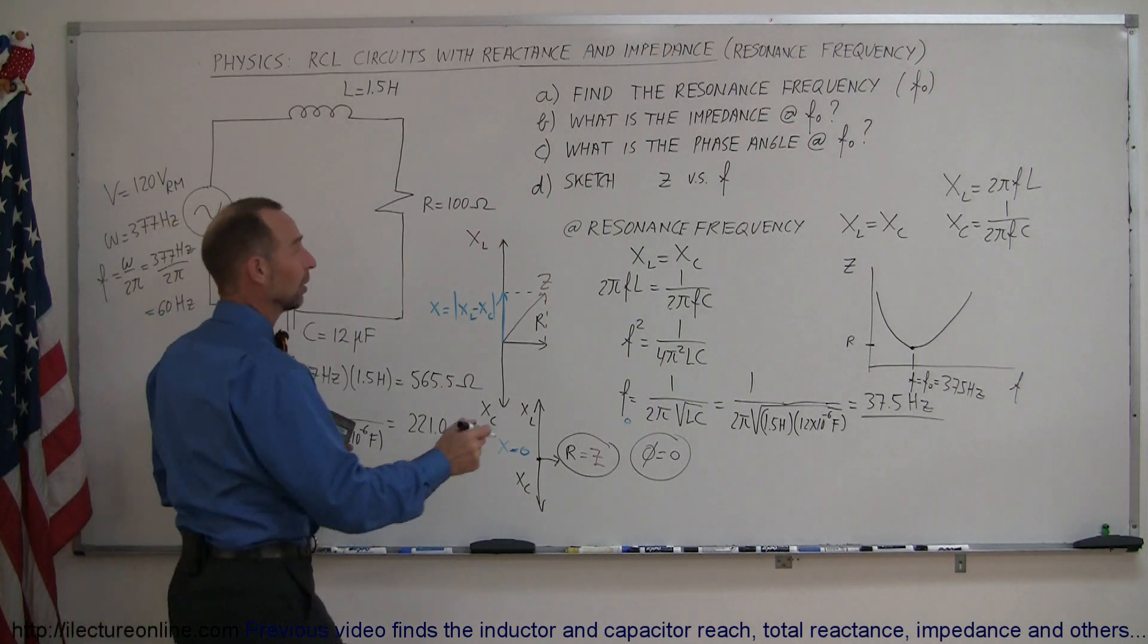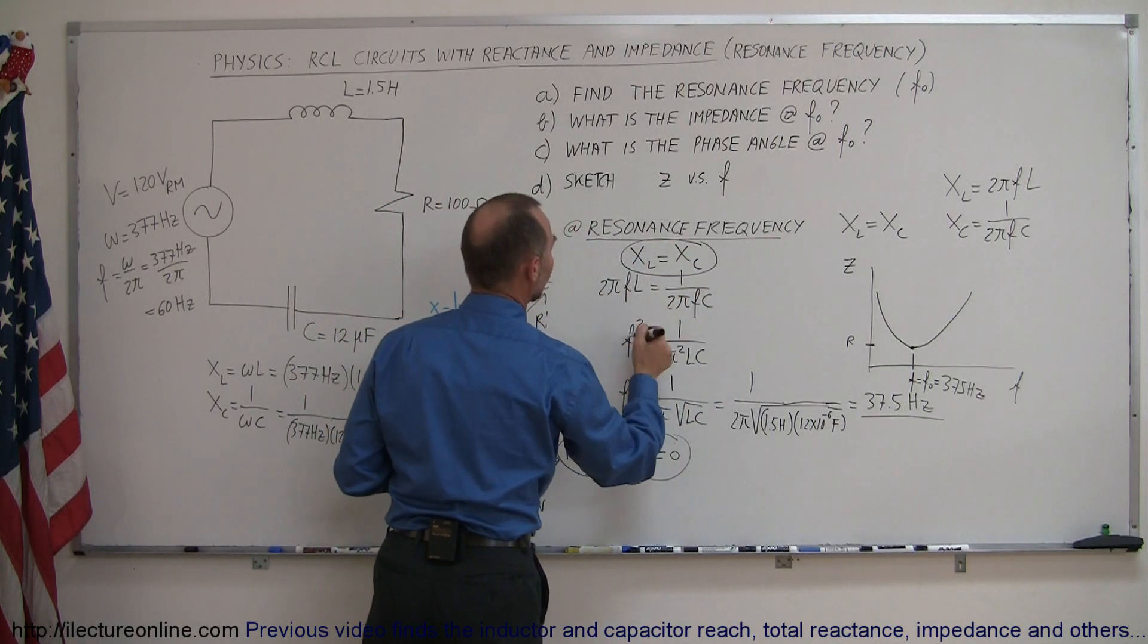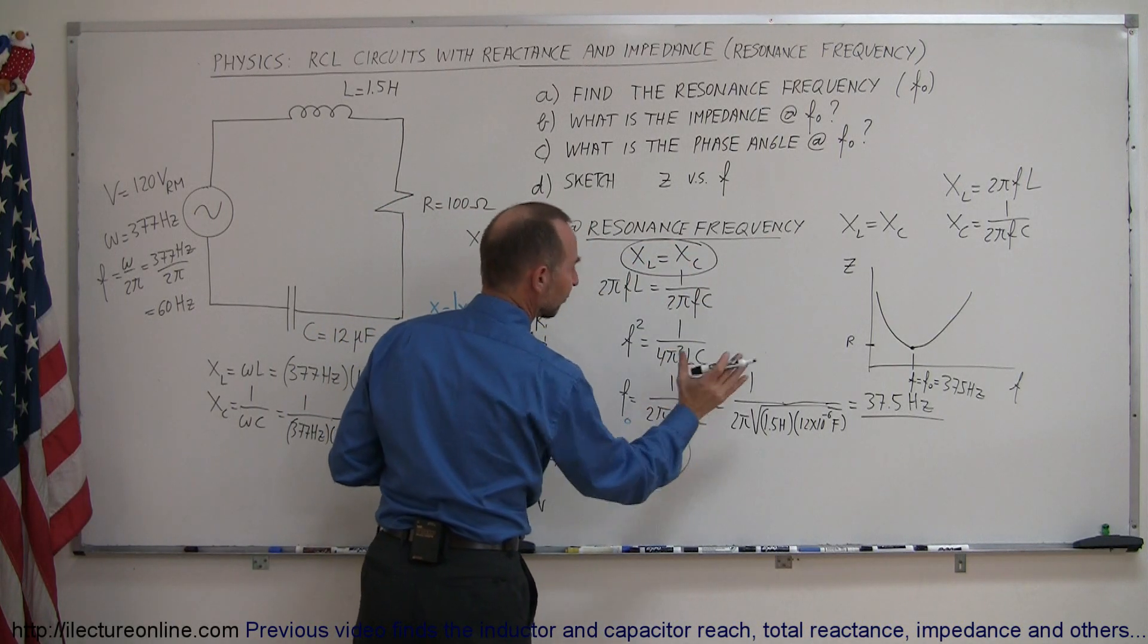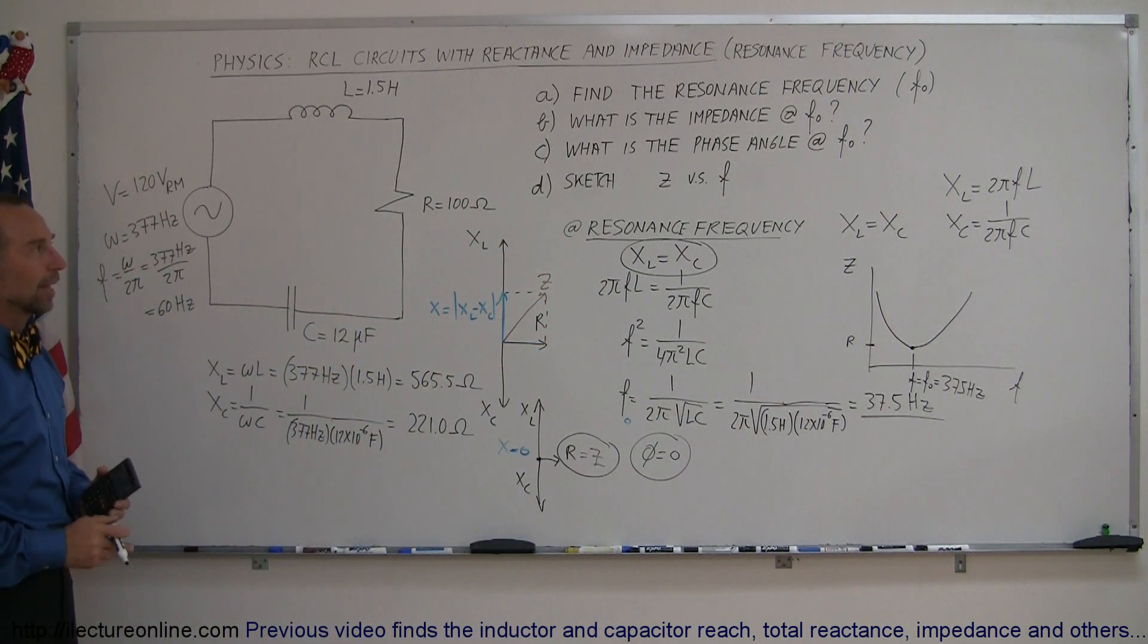So again, to recap, if you want to find the resonance frequency, you set the X sub L equal to X sub C, like this, solve for F, and that's the resonance frequency. Alright, good luck with that.